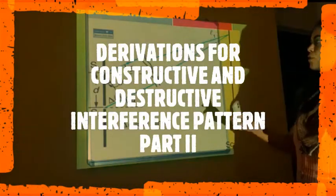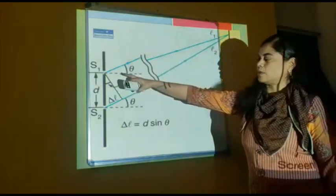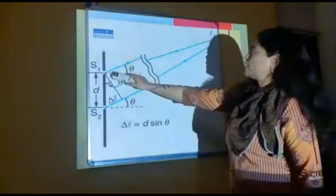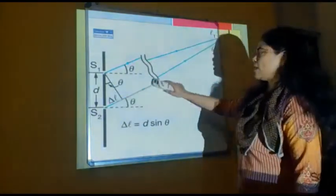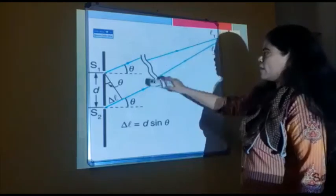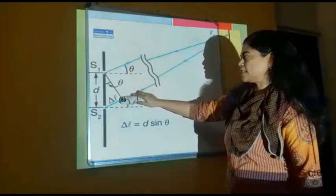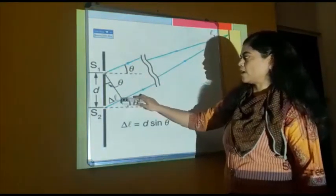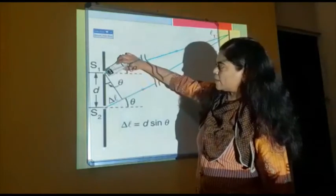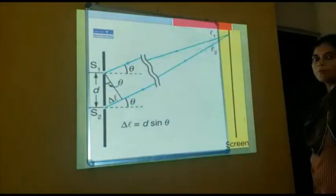Path difference between the two slits. S1 will be the first slit and S2 will be the second slit. One ray continues from S1 and another ray from S2. These two rays would meet. If L1 is the path of the first wave and L2 is the path of the second wave, then delta L is the path difference. If you construct a perpendicular from the first line to the second line, delta L is the difference between these two waves.